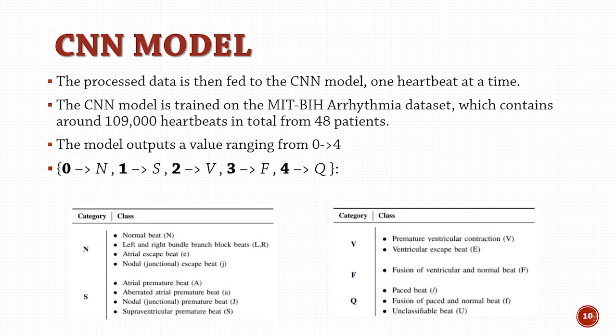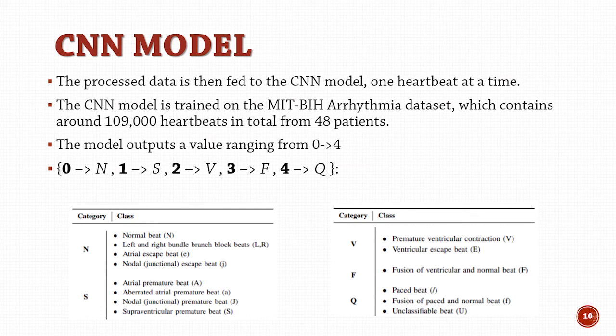The CNN model is trained on the MIT-BIH dataset which contains ECG readings of 48 patients, totaling about 109,000 heartbeats. The individual processed heartbeats are then fed to the CNN model one heartbeat at a time. The output of the model will be a class, which is a number ranging from 0 to 4. Each class contains a number of heart diseases. For example, if the user is diagnosed with class 0, it means they have a normal heartbeat and their heart is healthy. But if the user is diagnosed with class 3, it means he is likely to have a premature ventricular contraction and needs to see the doctor.